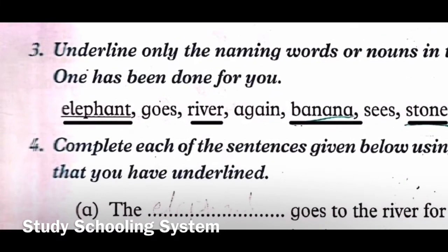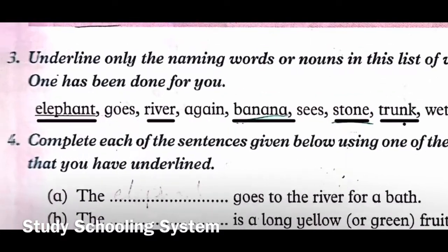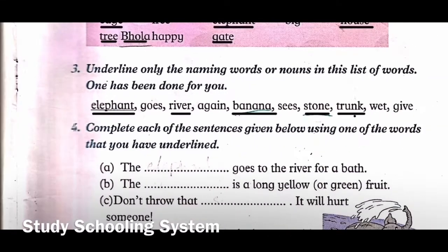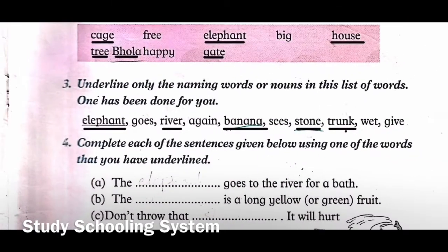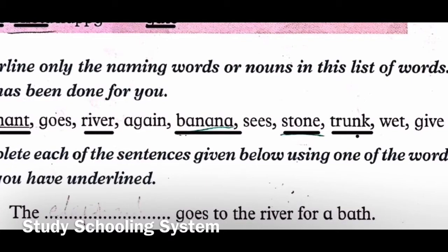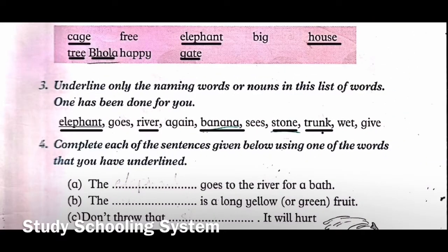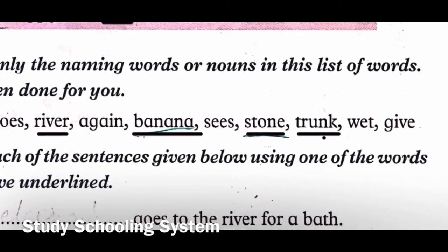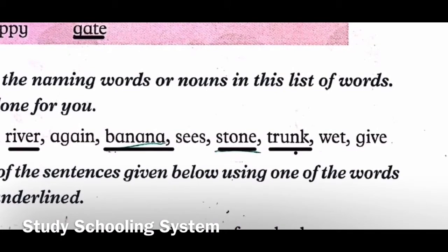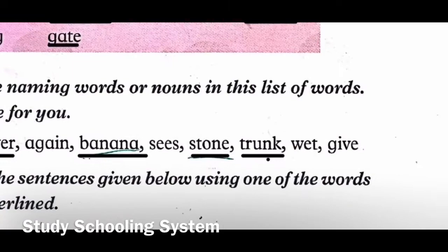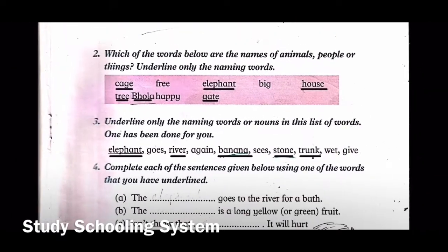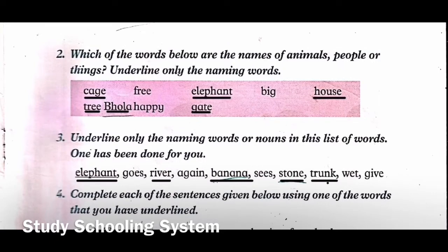Number three: underline only the naming words or nouns. One has been done for you - 'elephant' is underlined. 'Goes' - no, it is an action, a verb, not a noun. 'River' - yes, it is a thing, underline it. 'Again' - no, it's a describing word. 'Banana' - yes, it is food, a thing, underline it. 'Sees' - this is an action, not a noun. 'Stone' - a thing, underline it. 'Trunk' - a thing, underline it. 'Wet' and 'give' are also not nouns.